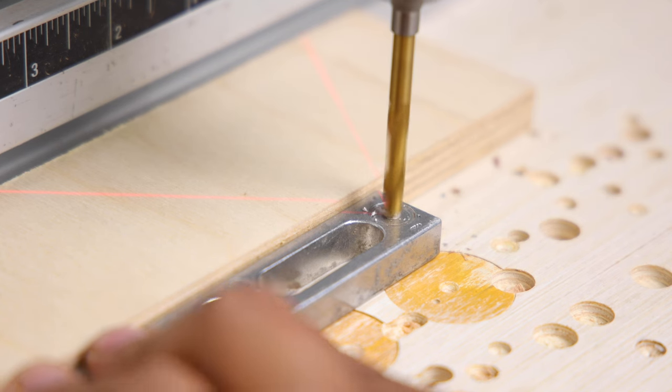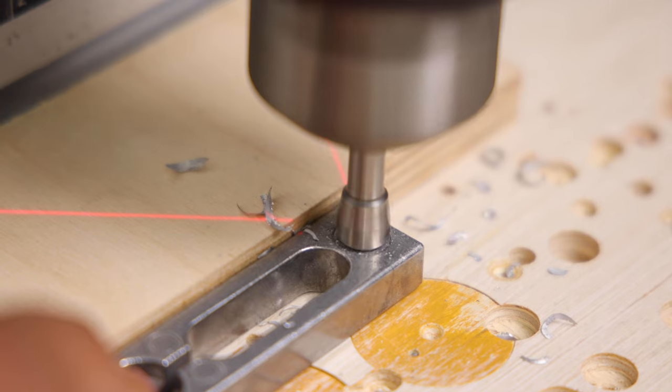My miter locking bar doesn't have any holes on each end, so I'm going to drill them because it'll be helpful in securing the bar to the rest of the jig.